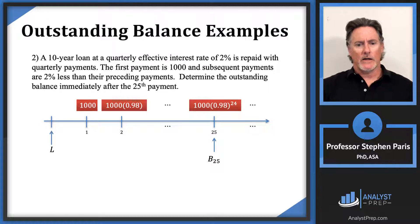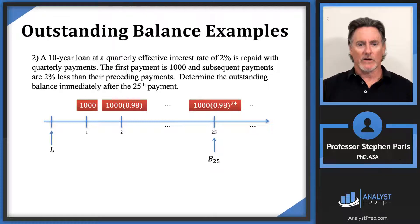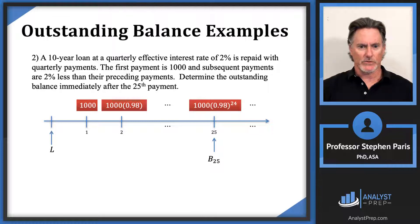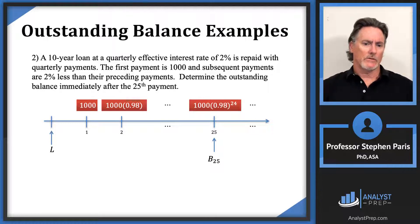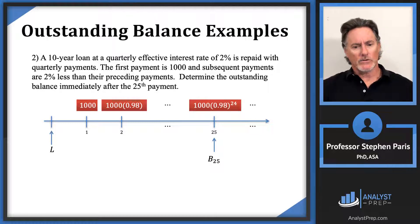There's also missing information — the original loan amount is not given. Drawing the timeline, I can see the payment pattern but not the original balance. If I tried to do this retrospectively, I'd need that loan amount. I could calculate it from the 10-year loan structure, but that would not be efficient. So using the retrospective method for the balance at time 25 is not the best choice here.